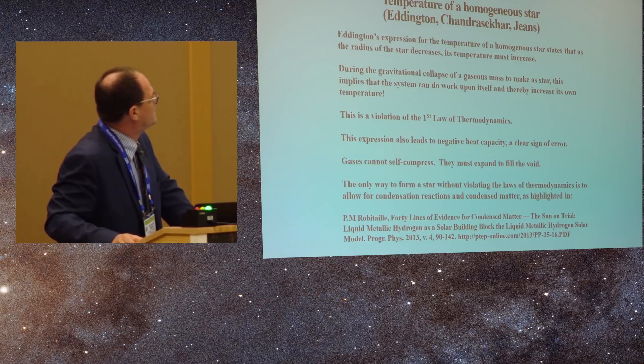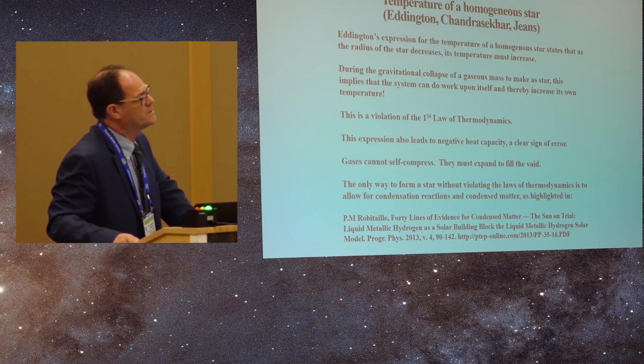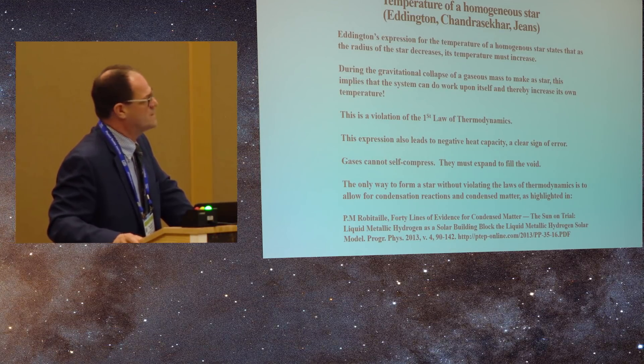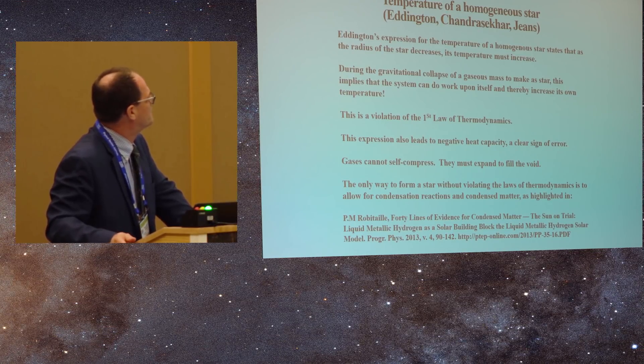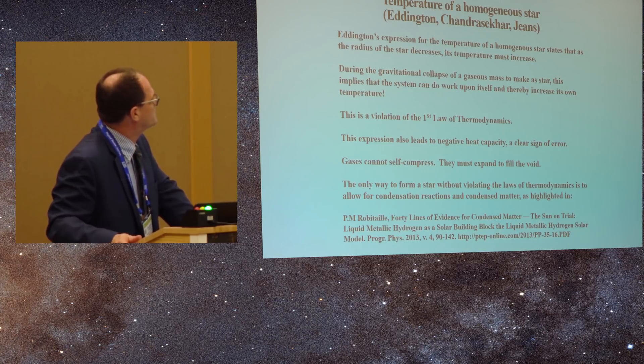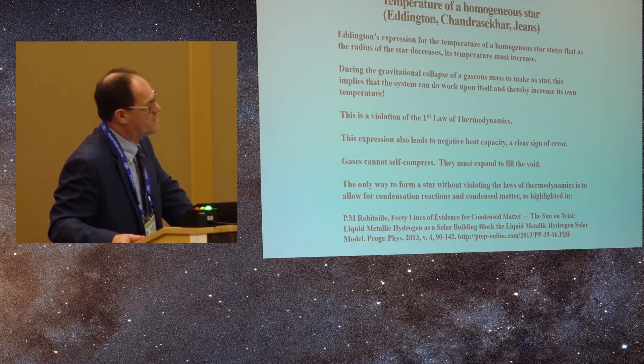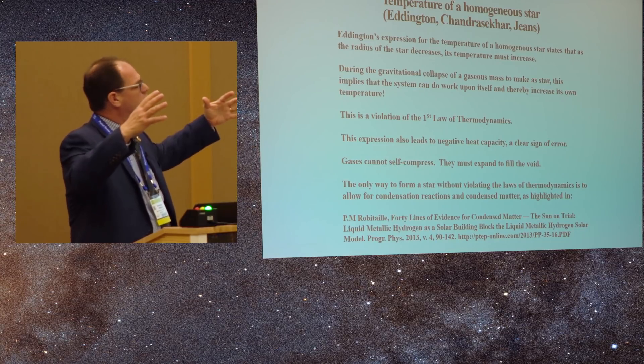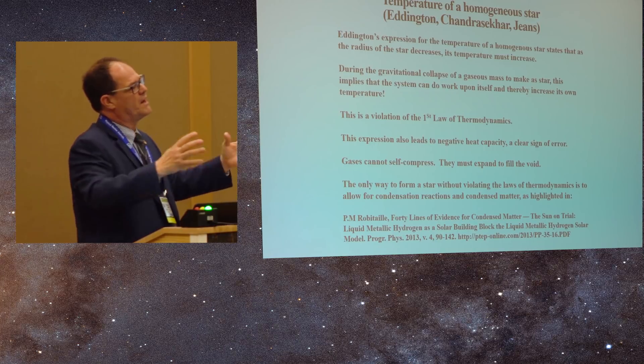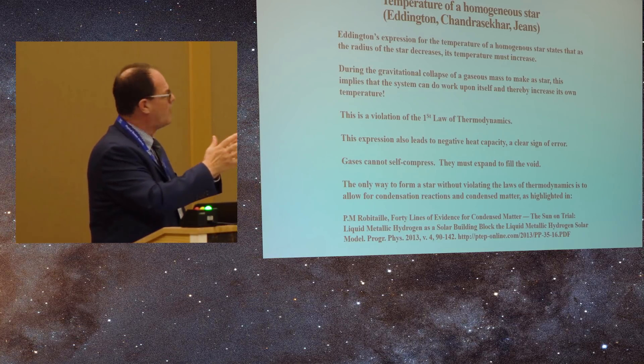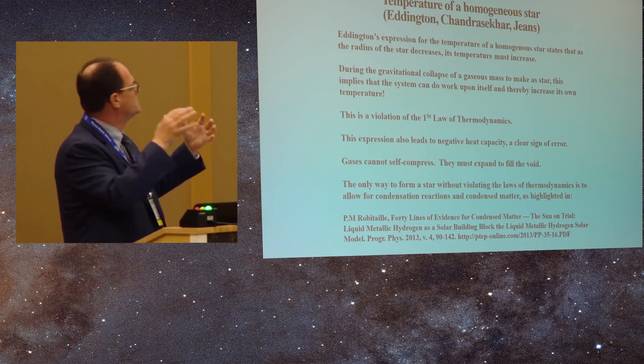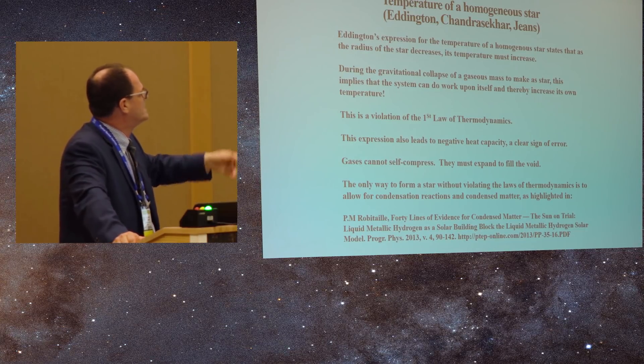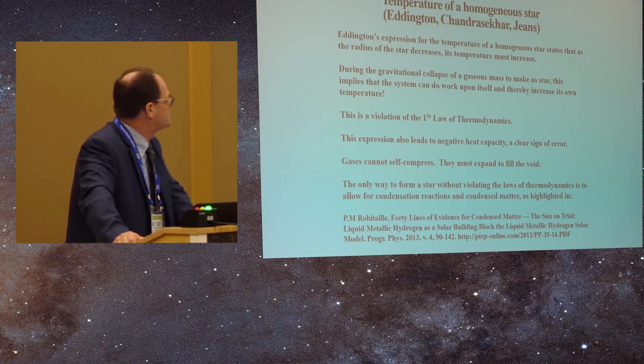So this expression also leads to the negative heat capacity of a star, and that's also a clear sign of error. So gases cannot self-compress. They must expand to fill the void. That's what we see in the laboratory. So the only way to form a star without violating the laws of thermodynamics is to allow for condensation reactions and condensed matter, as I highlighted in this paper. So what I'm saying is that the stars cannot be made from gaseous plasma. If you do that, if you think that a star is just made from the self-compression of a gas, you're going to be in violation of the laws of thermodynamics. Actually, all the laws, the first, second, and third law, because you don't have an engine in which to do the compression, so you're in violation of the second law. You also don't have a means of emission if you have an ideal gas.